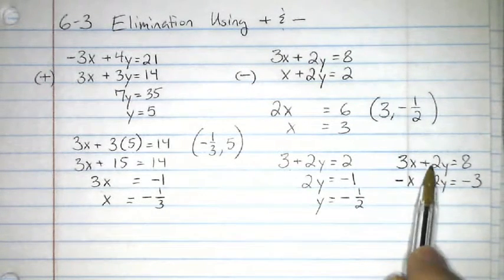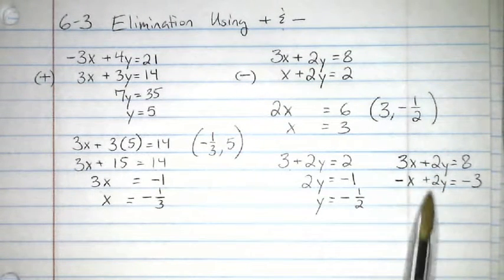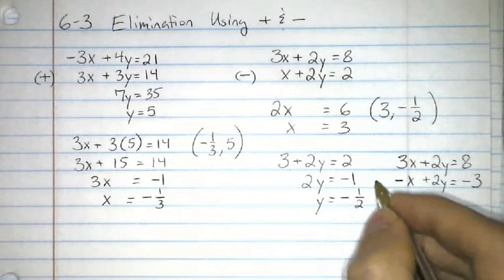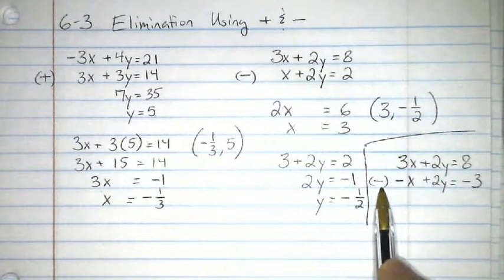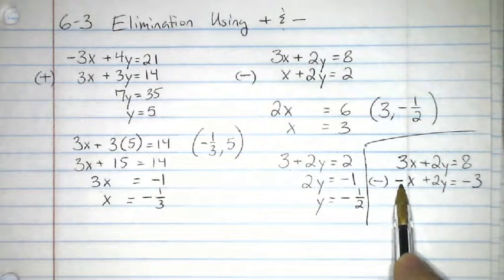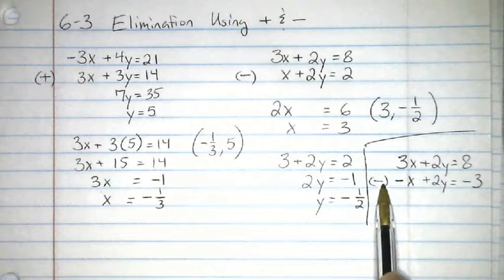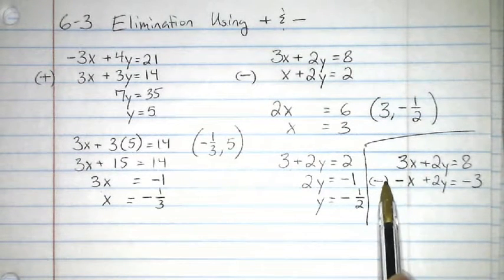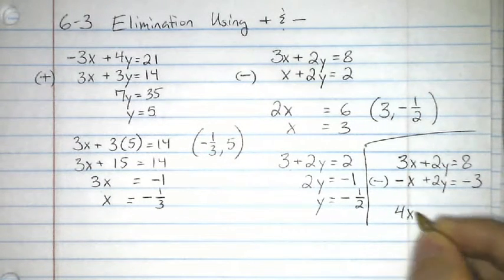Now, again, I'm going to subtract because the y's have the same coefficient, exactly the same, same sign and everything. I'll put a little bar there so we don't get confused. Now, remember, when you're subtracting a negative, that's the same thing as adding. So, instead of 3x minus x, this is actually 3x plus x. So, here we'd have 4x.